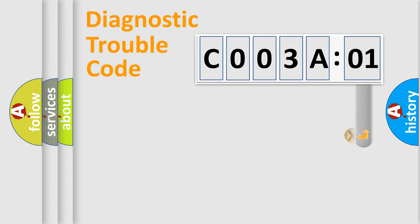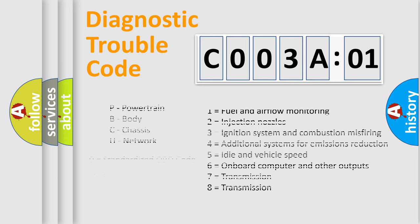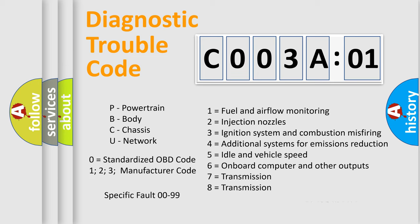The add-on to the error code serves to specify the status in more detail, for example, a short to the ground. Let's not forget that such a division is valid only if the second character code is expressed by the number zero.